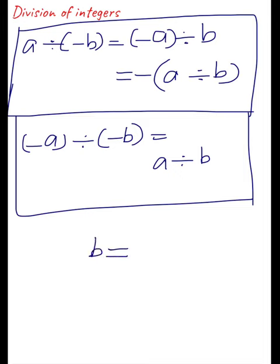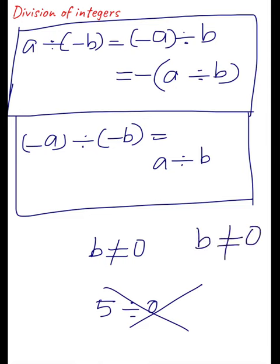In both cases, b must not be equal to 0, because if b = 0, division is not possible — for example, 5 ÷ 0 is not possible. So b ≠ 0 is a must condition. That's all about the division of integers. Thank you.